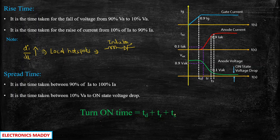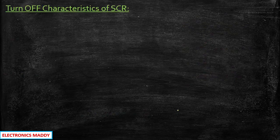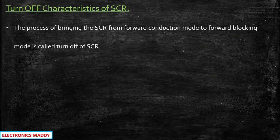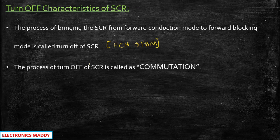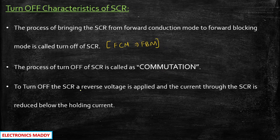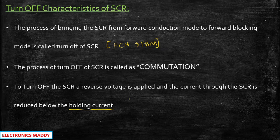If you have understood turn-on characteristics, turn-off characteristics is almost the opposite. Turn-off characteristics is the process of bringing the SCR from forward conduction mode to forward blocking mode — basically the reverse of turn-on. This can be achieved by applying some amount of reverse voltage, and this process is called commutation. A reverse voltage is applied and the current through the SCR is reduced below the holding current.